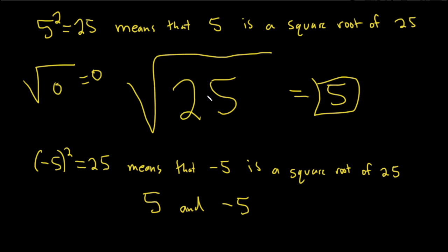So whenever you have a positive number here and you see this symbol, you want the positive square root. So the positive square root of 25 is 5.